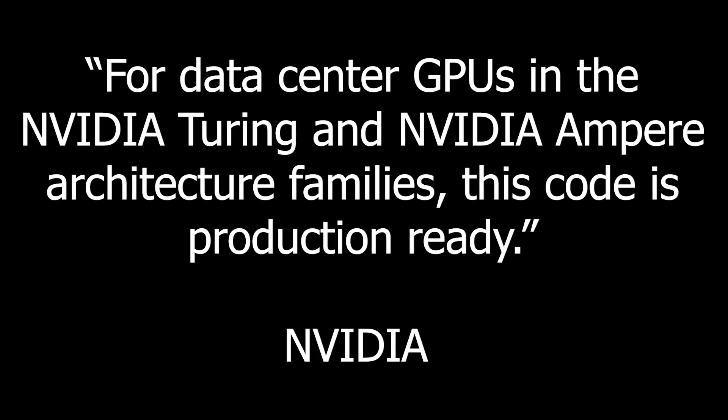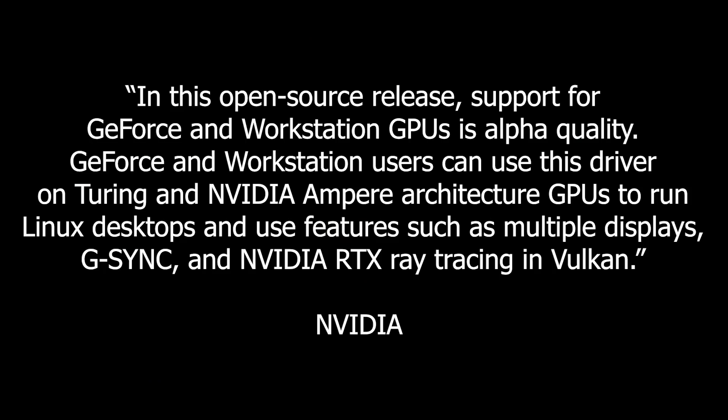This version released today is production ready for people using GPUs in the data center — machine learning, game streaming, and so on. For Turing and Ampere in the server area, this is ready. It's considered alpha quality for desktop use, so GeForce cards are alpha quality. However, if you do use it, you get access to multi-monitor display, re-clocking, G-Sync, RTX, and ray tracing. It's a full proper driver, just not quite best quality for the desktop environment yet.